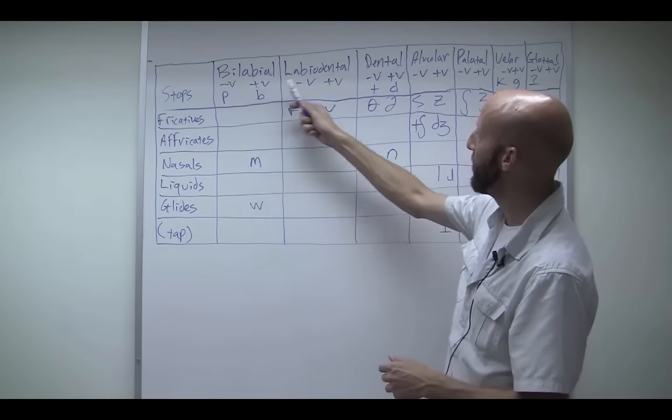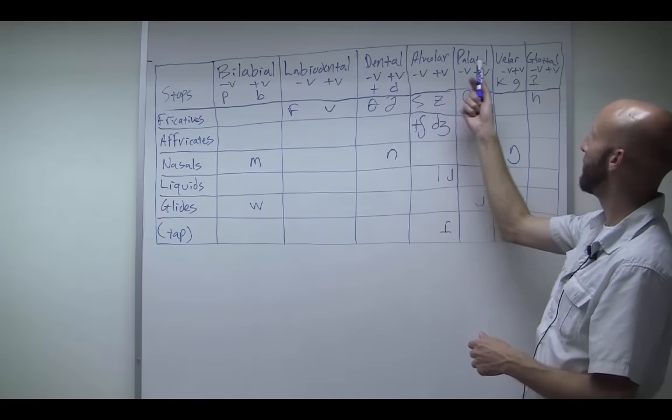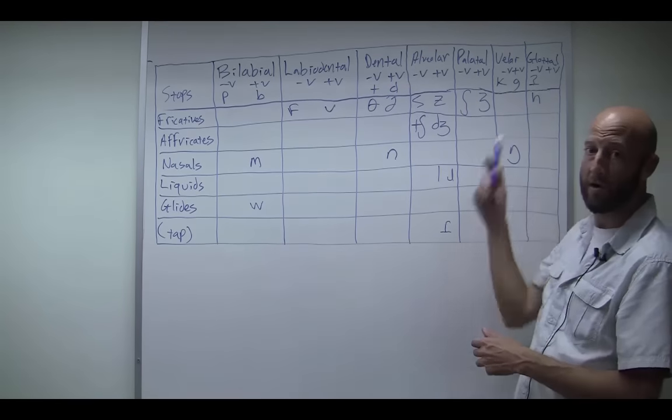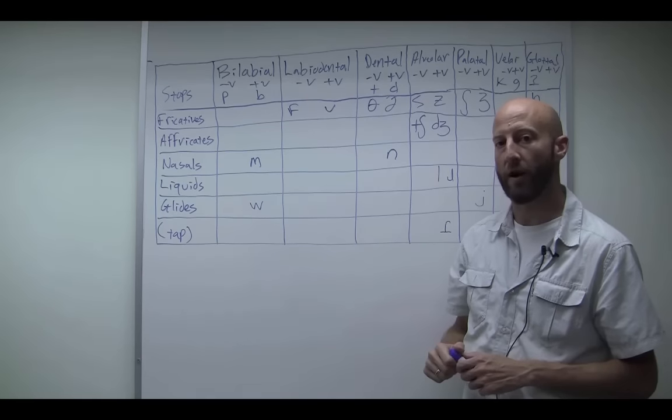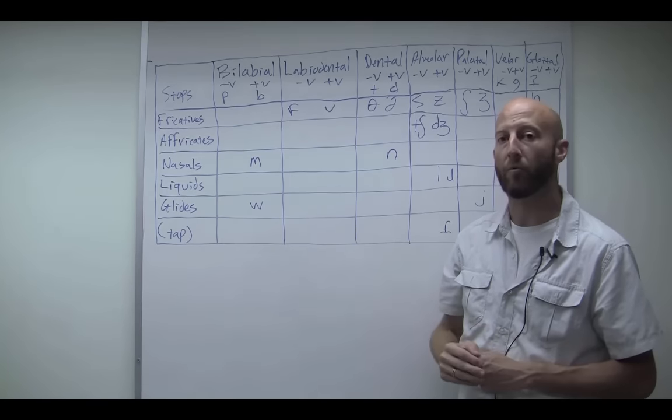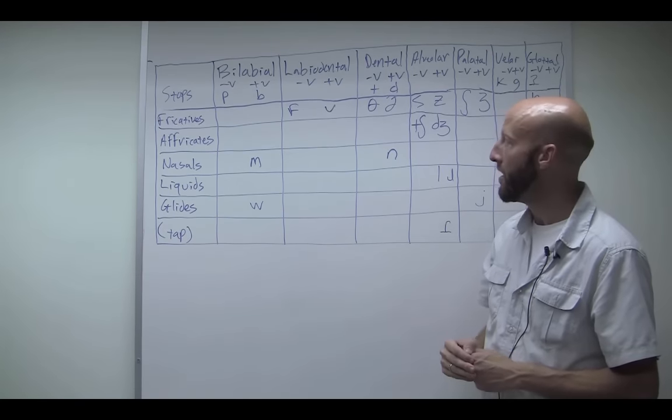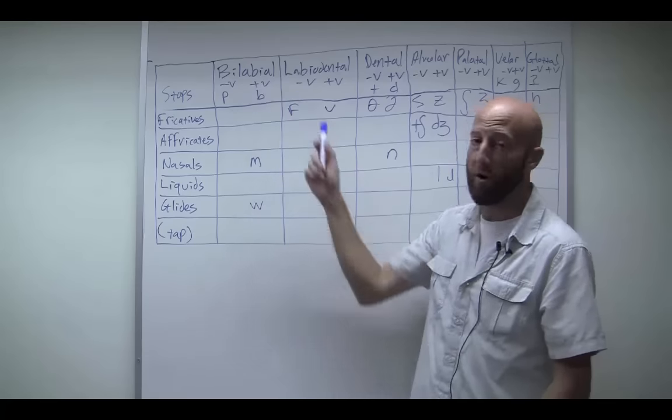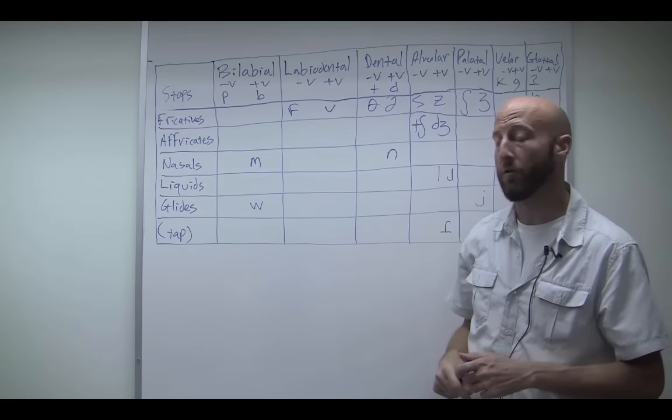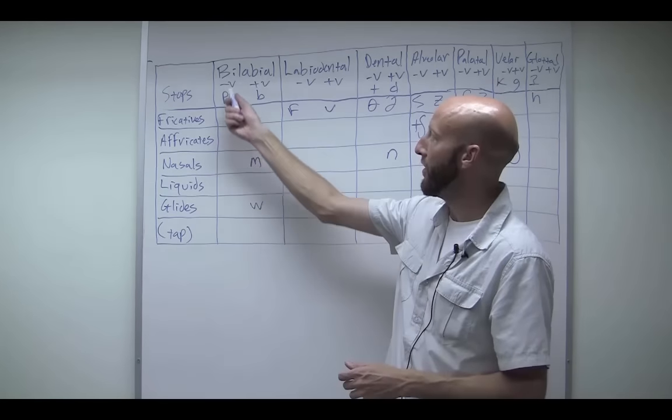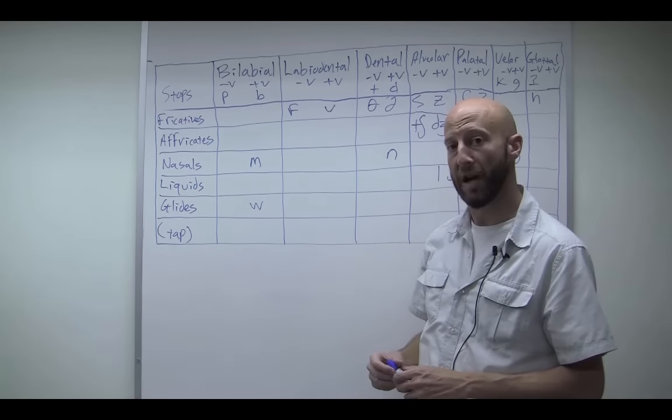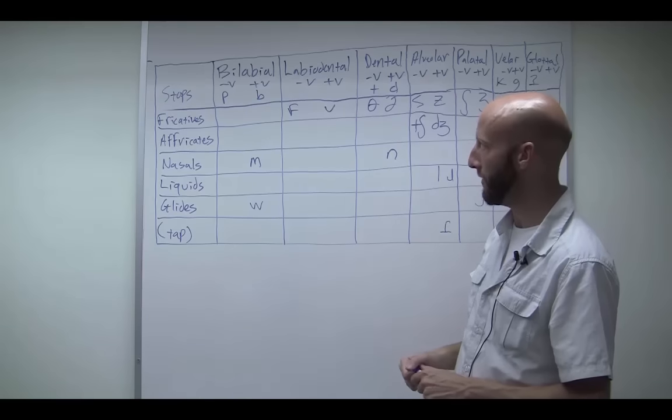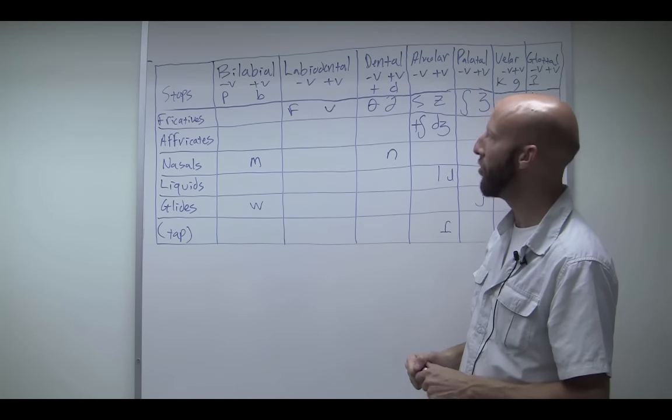And across, we have bilabial, labiodental, dental, alveolar, palatal, velar, and glottal. These are all places of articulation, where in the vocal tract is the airflow being constricted. And then we have voicing. Remember, all sounds that are consonants are either voiced or voiceless. Voiceless ones are indicated on the left side of each one of these columns with minus V, and the voiced sounds are indicated with plus V.